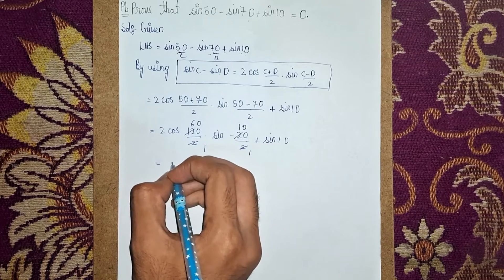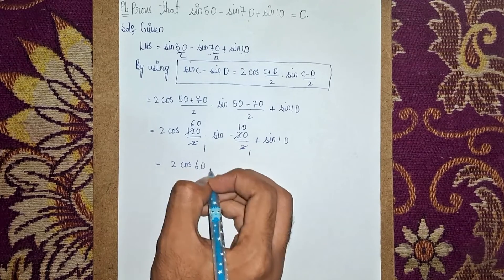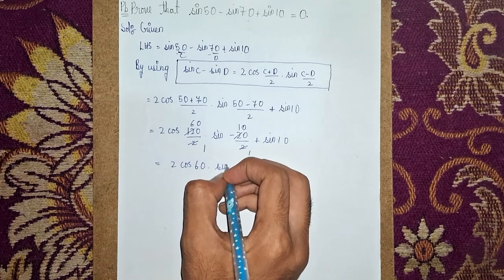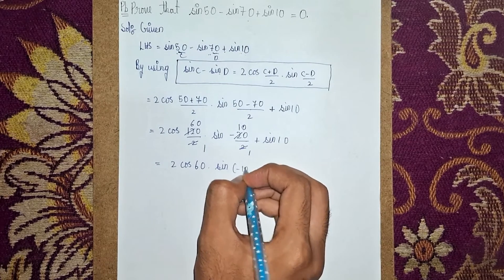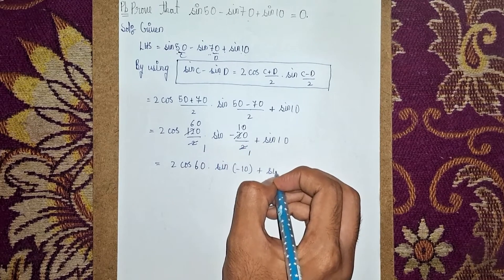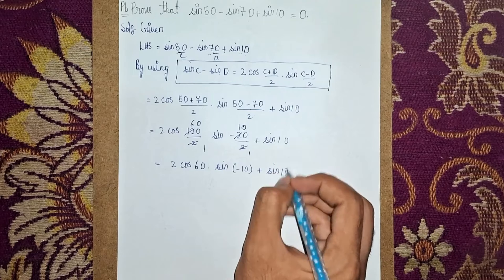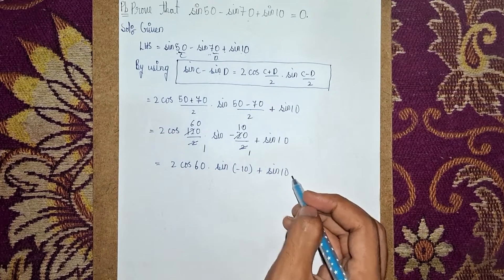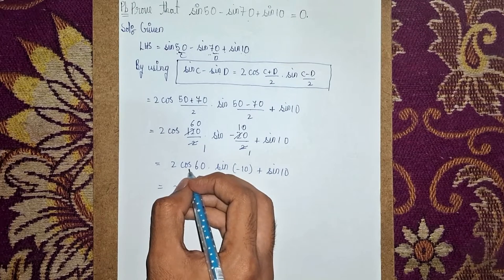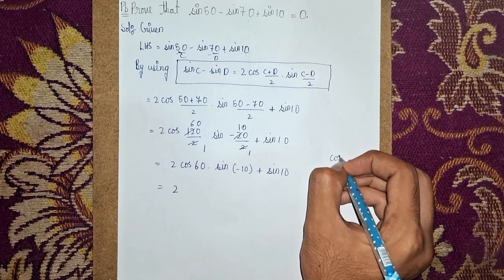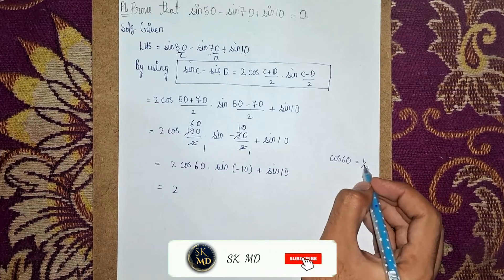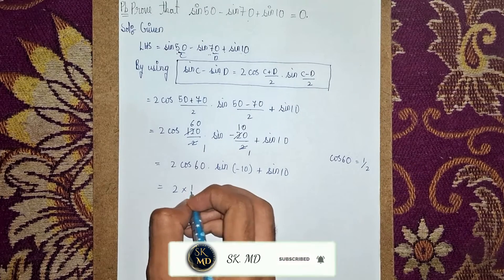This equals 2 cos 60 times sin(minus 10), plus sin 10. From the trigonometric table, cos 60 equals 1 over 2. So we substitute 1 over 2 for cos 60, giving us 2 times 1 over 2, multiplied by sin(minus 10), plus sin 10.